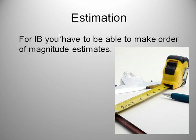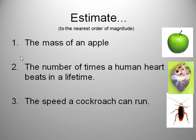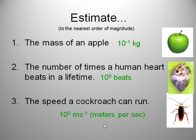You need to be able to estimate in IB physics. That's a very valuable skill. For example, let's estimate the mass of an apple, number of times a human heart beats in a lifetime, and how fast a cockroach can run. To the nearest order of magnitude, the mass of an apple is about a tenth of a kilogram. The number of times a human heart beats in a lifetime, it's about 70 beats per minute, and the average age of a human is maybe 70. This will depend on some assumptions. I got about a billion beats in a lifetime. And how fast can a cockroach run? We estimate about one meter per second. That's a very fast cockroach.